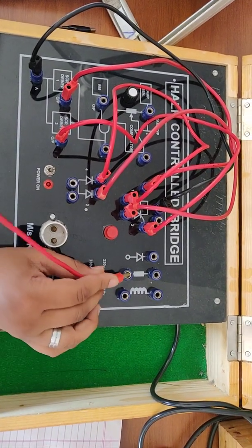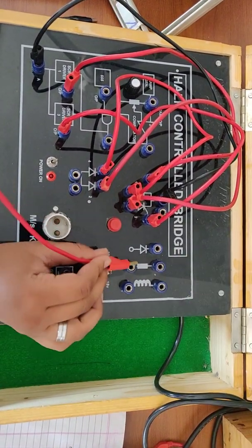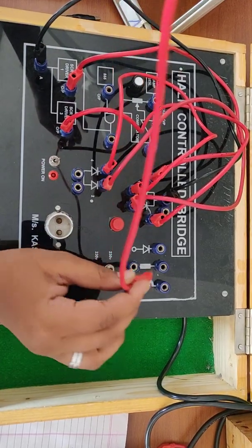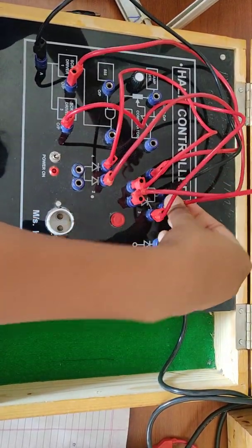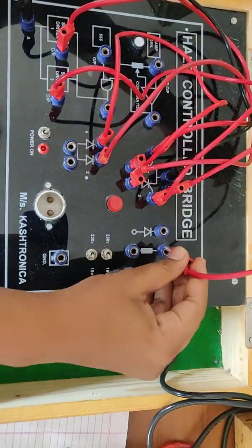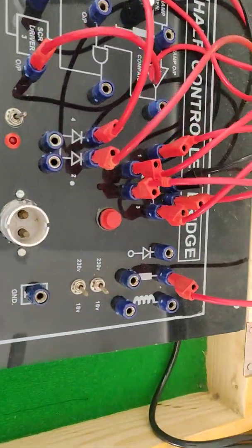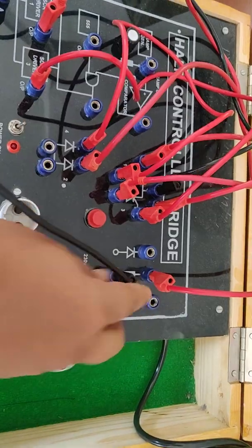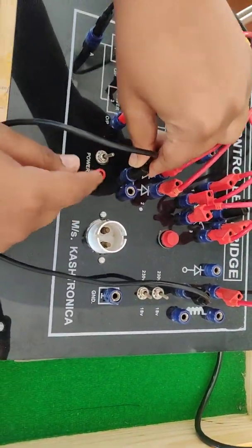Now we need to connect the load. There are three types of loads so we are using the resistive load. The resistive load is connected to this and the negative is shorted with the diodes. These two are internally shorted.